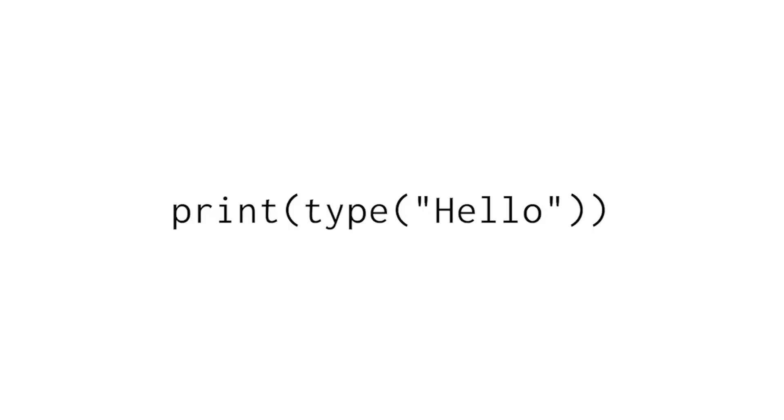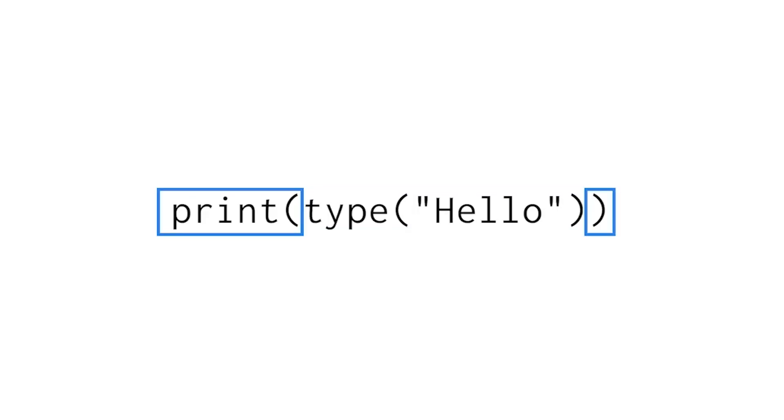For example, in this line of code, Python first returns the data type of 'hello' as a string. Then this return value is passed into the print function, meaning the data type will be printed to the screen. Print and type are not the only functions used together this way. The inner function is processed first, and then its return value is passed to the outer function.